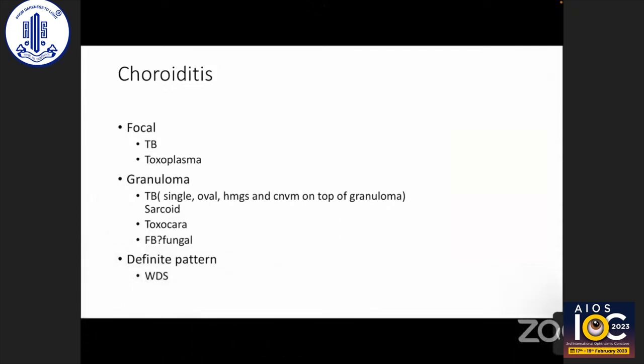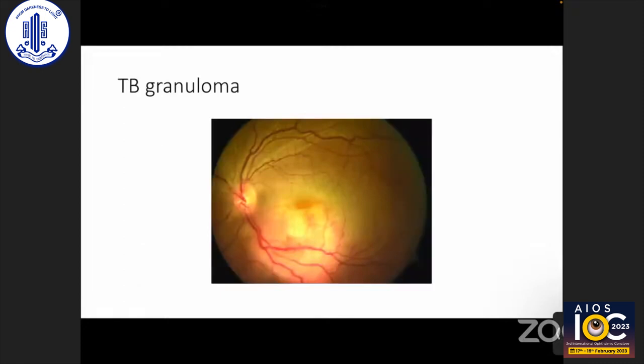Choroiditis can be focal, as seen in TB and toxoplasma granuloma. TB granuloma is usually single and oval with hemorrhages and choroidal neovascularization (CNV) on top. Sarcoid granulomas are usually multiple. Toxoplasma granuloma can also occur, and lesions can have an underlying foreign body or be fungal in origin. If we see a definite pattern of choroiditis, we should consider white dot syndromes. TB granuloma has a very typical picture — single, oval, with some hemorrhage or CNVM.